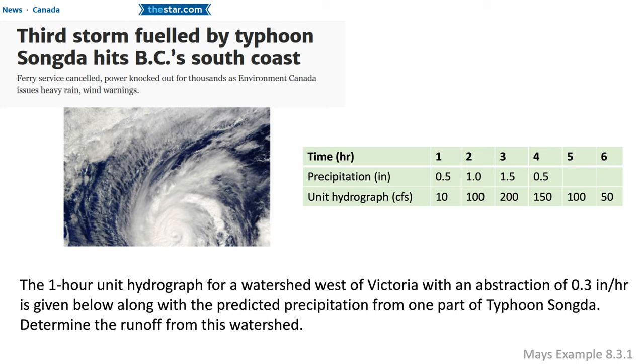There are three storms. We're going to look at the third storm. In that storm, there are four precipitation intervals. For each hour over four hours, we recorded a precipitation rate.